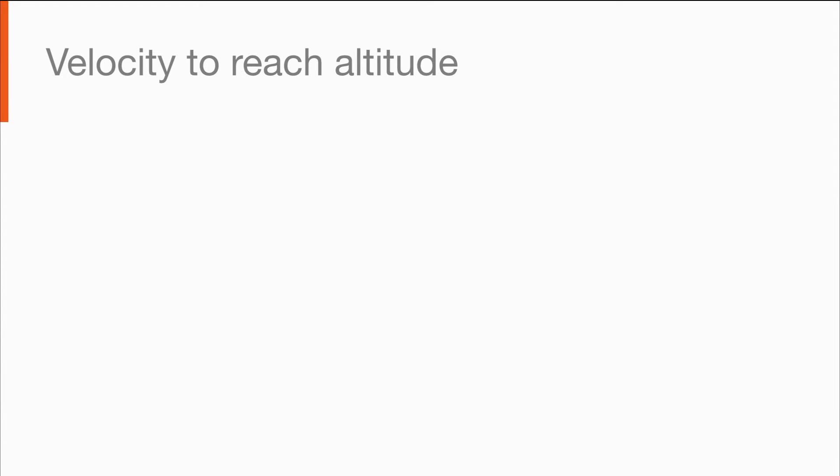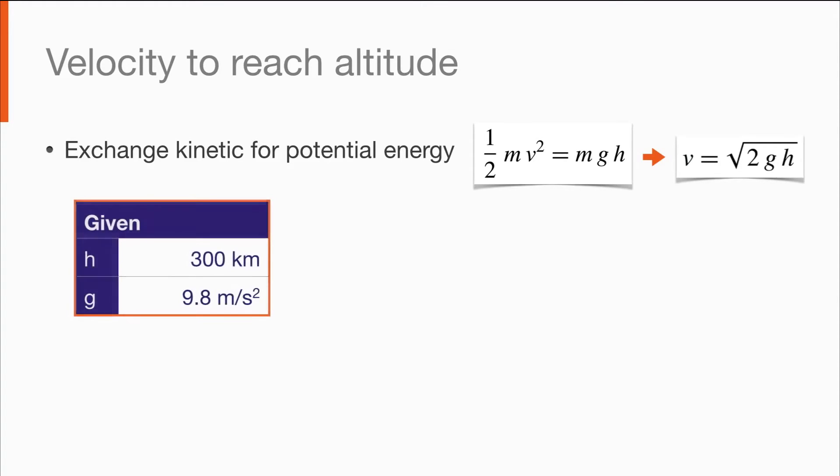So let's aim a bit higher. We'll use the conservation of energy again, but this time we're going to figure out what velocity we need to achieve a given altitude. This time we solve for v. Now we want to aim for a good, healthy altitude at which sustaining an orbit is a reasonable proposition, say 300 km. We'll take a value for g again of 9.8 m per second squared. Plugging these values into the equation gives us a velocity of 2.4 km per second.